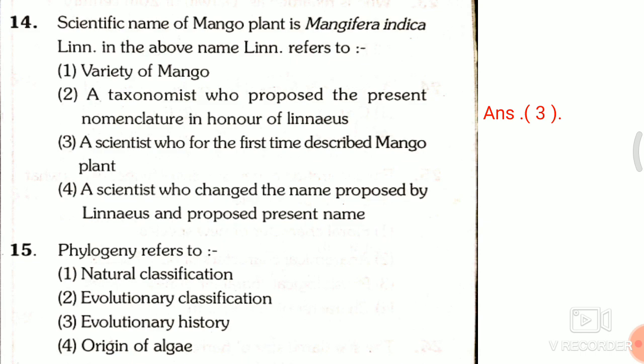Question 15: Phylogeny refers to — first, natural classification; second, evolutionary classification; third, evolutionary history; fourth, origin of algae. The correct answer is the third one, evolutionary history.